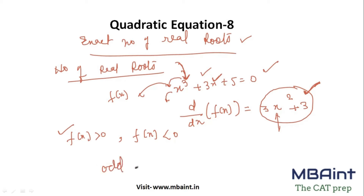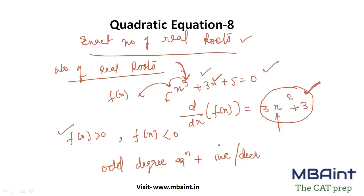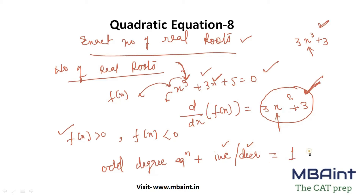So in order to find the exact number of real roots, you need: an odd degree equation, plus the function should be either increasing or decreasing. Here I can see it's clearly increasing. So if a function is either increasing or decreasing, you will always have exactly one real root.